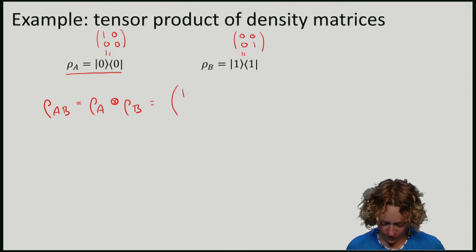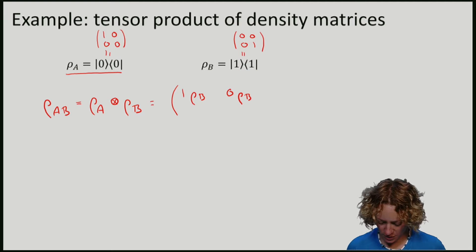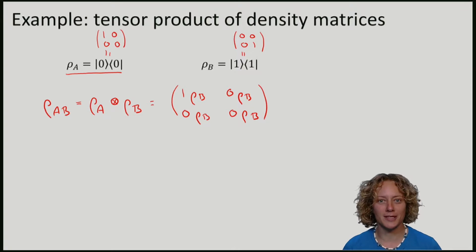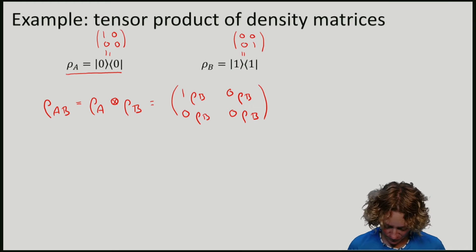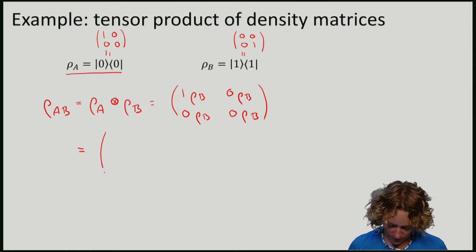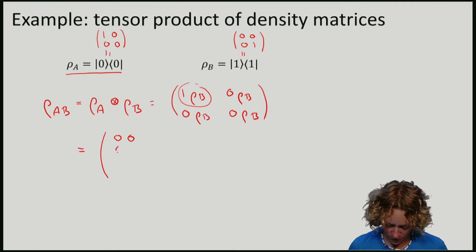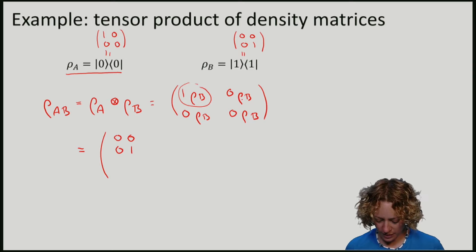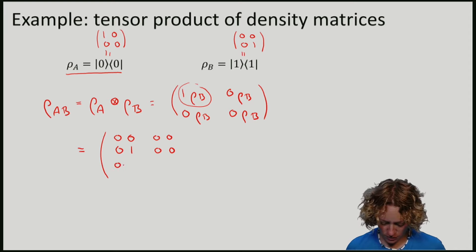We now apply the rule of taking rho B and tagging it onto the coefficients of rho A. So what this means is that I have 1 times rho B, 0 times rho B, 0 times rho B, and 0 times rho B. So if I insert the matrix rho B, up here in this corner I just have the matrix rho B, and for all the other components I get zeros.